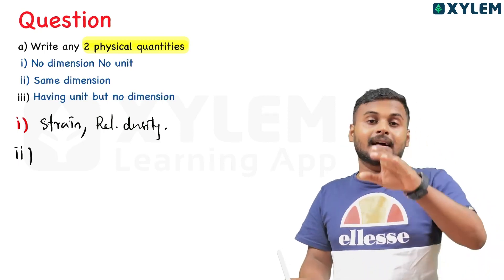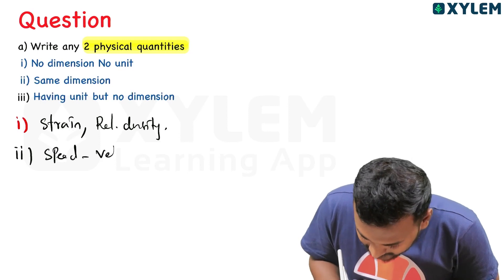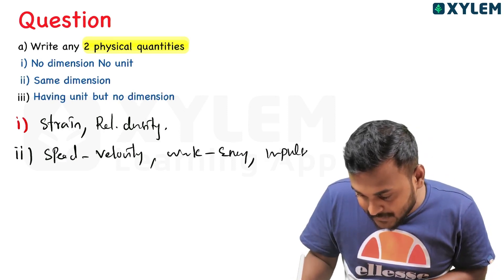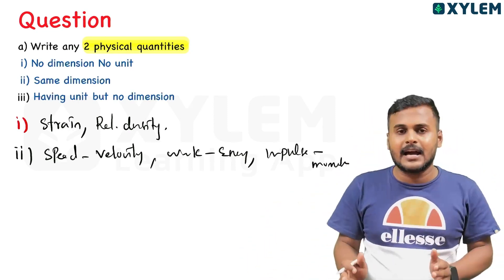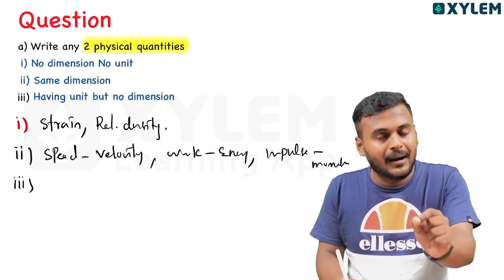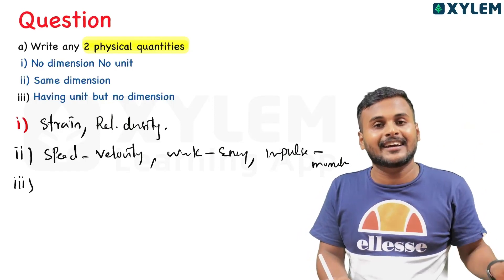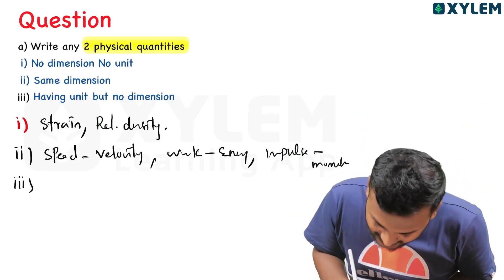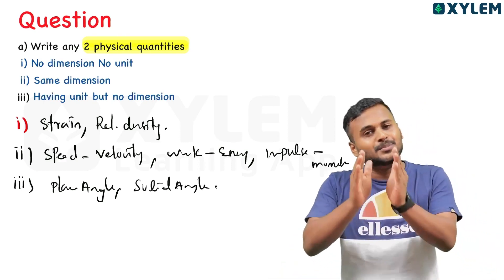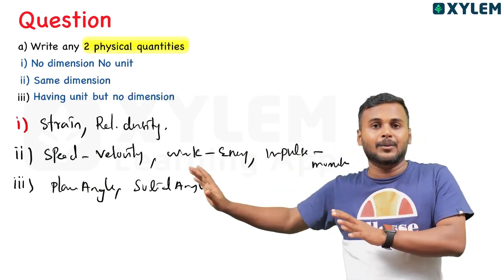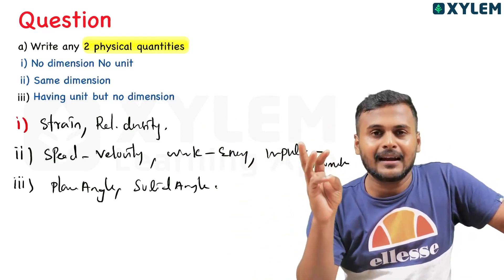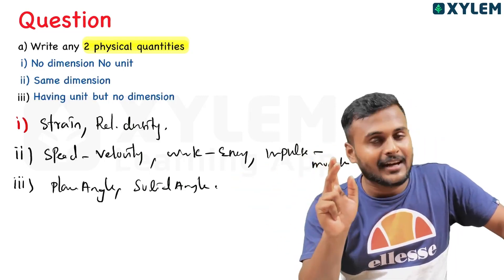Same dimension, same dimension — for example, speed and velocity have the same dimension. Work and energy have the same dimension. Impulse and moment of momentum also share the same dimension. Now, physical quantities with no unit and no dimension: strain and relative density are examples. Supplementary units having unit but no dimension: plane angle and solid angle are the two supplementary units.